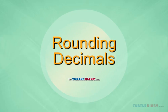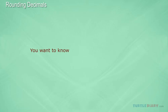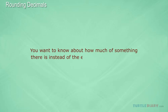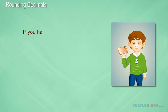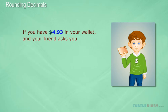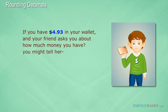Rounding Decimals. Sometimes you want to know about how much of something there is, instead of the exact number or quantity. For example, if you have $4.93 in your wallet and your friend asks you about how much money you have, you might tell her, I have about $5.